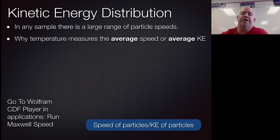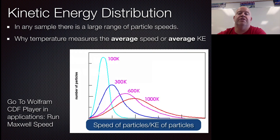So what we actually have is this huge range of particle speeds that happen to any sample of a gas. So if we take a look at this graph here, and here we have four different temperatures. We have 100 Kelvin, 300 Kelvin, 600 Kelvin, and 1,000 Kelvin.